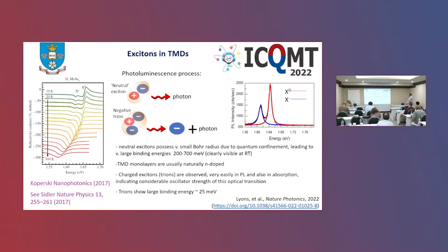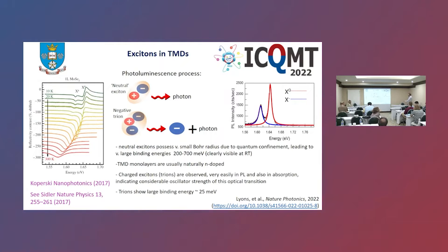When we get down to a monolayer, the optical properties of these materials are highly excitonic — we get about 15% absorption based on these excitons. The neutral exciton, which is just an electron-hole pair, has a very large binding energy due to quantum confinement in the 2D layer, leading to binding energies of about 200 to 700 meV depending on the material. This is clearly visible at room temperature as well as low temperature.